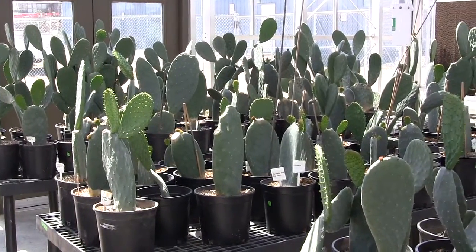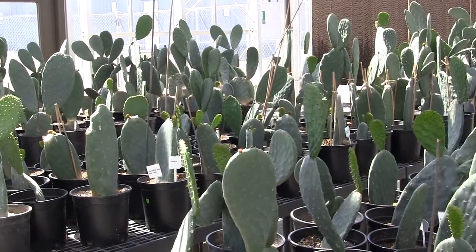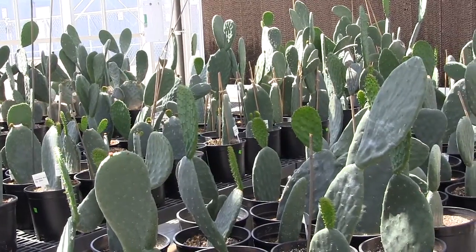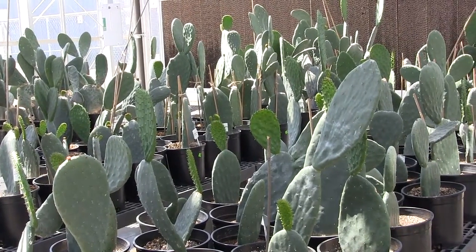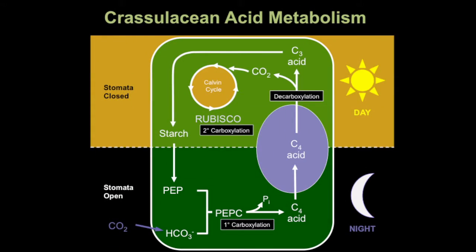CAM has evolved in more than 6% of vascular plant species and is typically associated with plants growing in semi-arid and arid environments, such as the prickly pear cactus shown here. The ability of CAM plants to grow in such arid environments can be explained by their high water use efficiency, which results from shifting net atmospheric CO2 uptake to the night time when evaporative water losses are reduced.